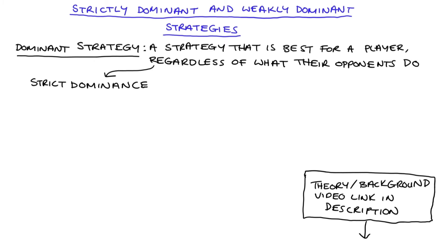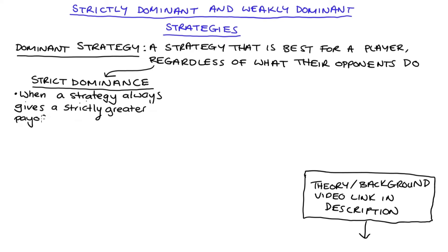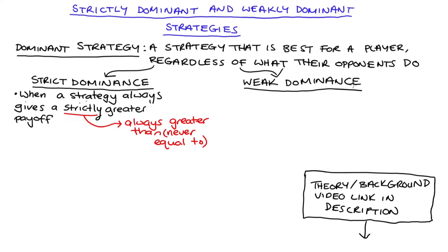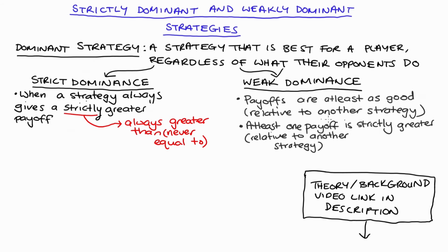On the one hand we have strict dominance. Strict dominance is when a strategy always delivers a strictly greater payoff relative to another strategy. The word 'strictly' means the payoffs are always greater — we're not allowing them to ever be equal. On the other hand, non-strict or weak dominance occurs when a strategy delivers a weakly greater payoff relative to another strategy. Weak dominance has two parts: the payoff must be at least as good as the other strategy — you never get a lower payoff — and the strategy must deliver a strictly greater payoff in at least one case.